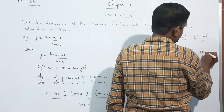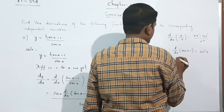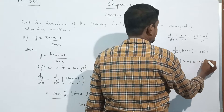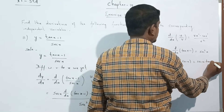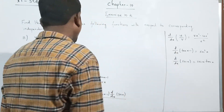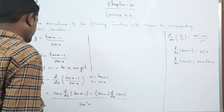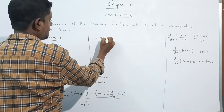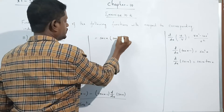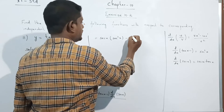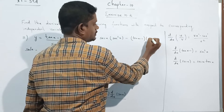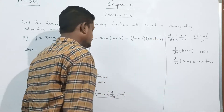Now, d/dx of (tan x minus 1) gives sec²x. And d/dx of sec x gives sec x · tan x. So we write: sec x times sec²x, minus (tan x minus 1) times sec x · tan x.